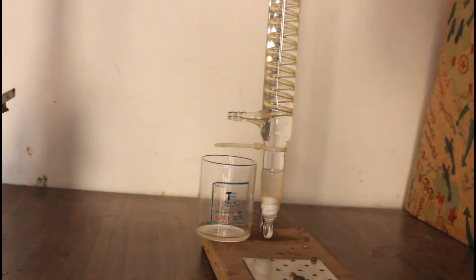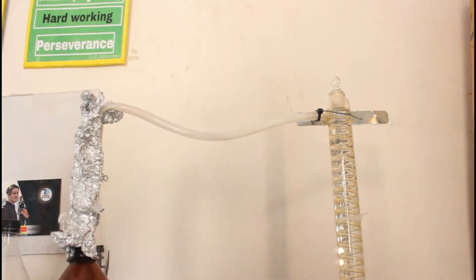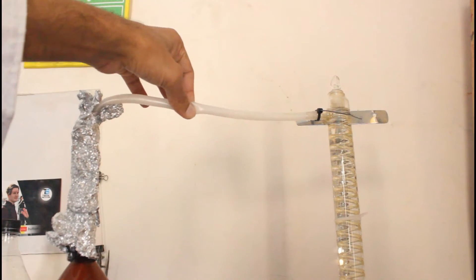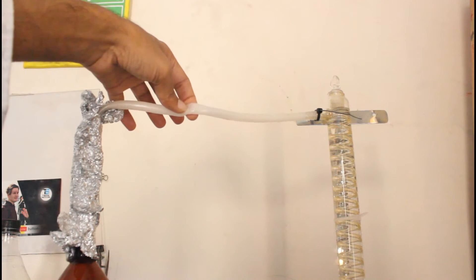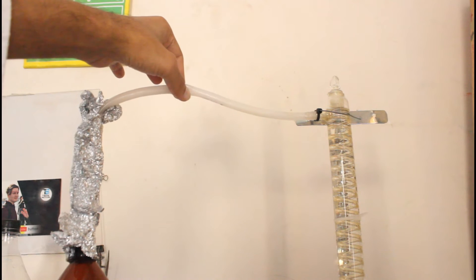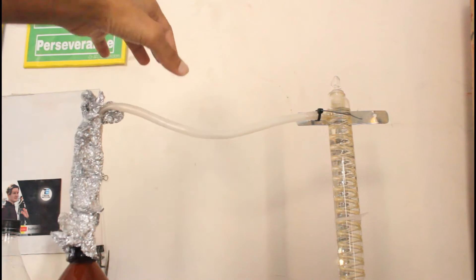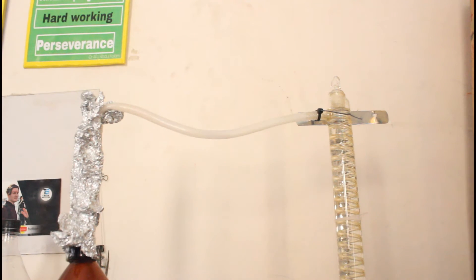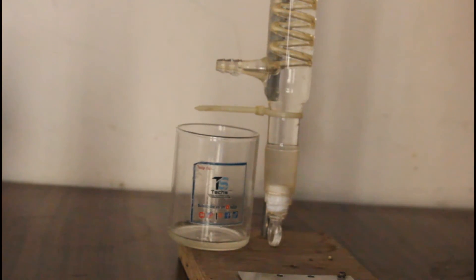And now we can see the liquid collected at the bottom. Using this rubber pipe is a bad idea. Actually I had to use a glass tube. The liquid getting collected at the curve but still we got some of the liquid.